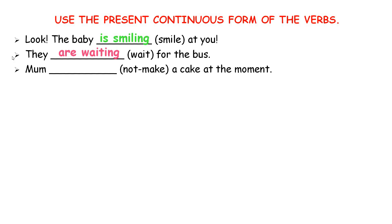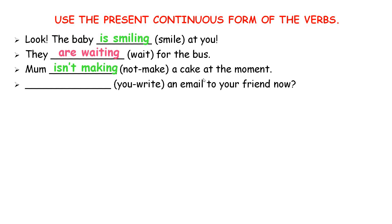The next one requires a negative sentence using the present continuous tense. Mom means 'she,' so we need to use 'isn't making.' The next one is a question. '___ an email to your friend now?' Our subject is 'you,' so we need to use 'are + verb-ing.' Are you writing an email to your friend now? Yes, I am.